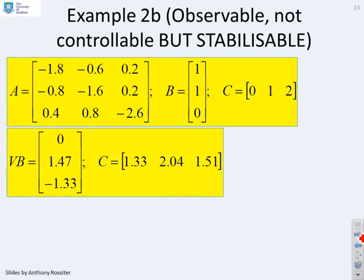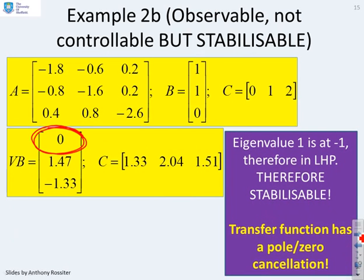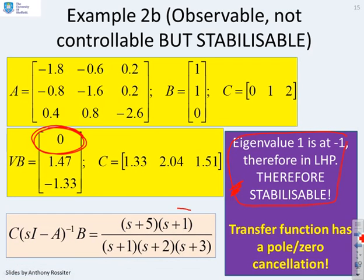Fourth example: here there is a zero in the first row of VB, giving an uncontrollable mode. The corresponding eigenvalue is at minus one, which is in the left half plane. Therefore, although the system is not controllable, it is stabilizable. The transfer function shows the cancellation at S plus one.